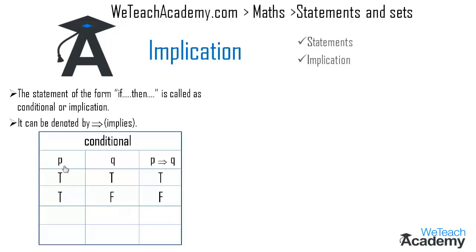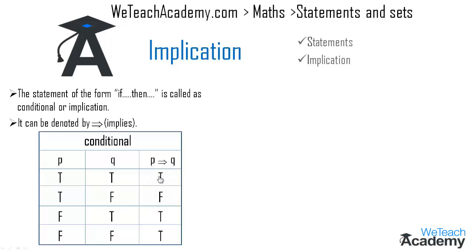If p is false and q is true, then p implies q is true. And if both statements p and q are false, then p implies q is also true. We observe that p implies q is false only when p is true and q is false; in all other conditions it is true.